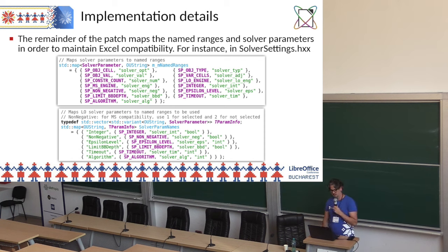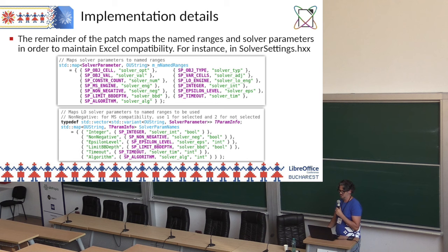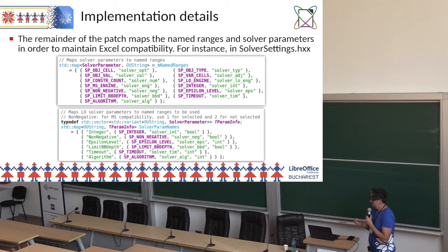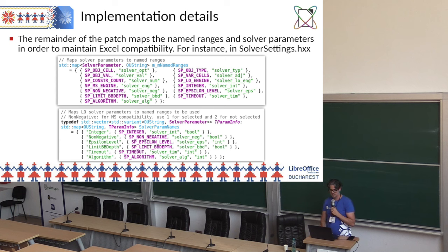The patch is essentially an effort of mapping which portions of the solver dialog correspond to each named range. In the upper part we have the main solver settings, which apply to all models. Below are solver engine-dependent settings, since not all settings are available for all engines. The names on the left are used internally by the LibreOffice solver service, and the corresponding names on the right are the named ranges used when importing and exporting the file.